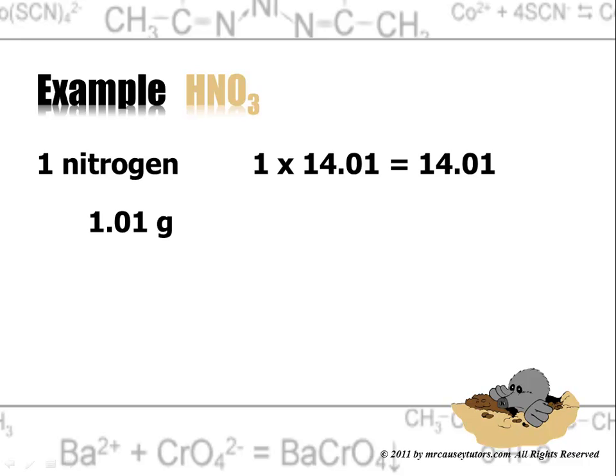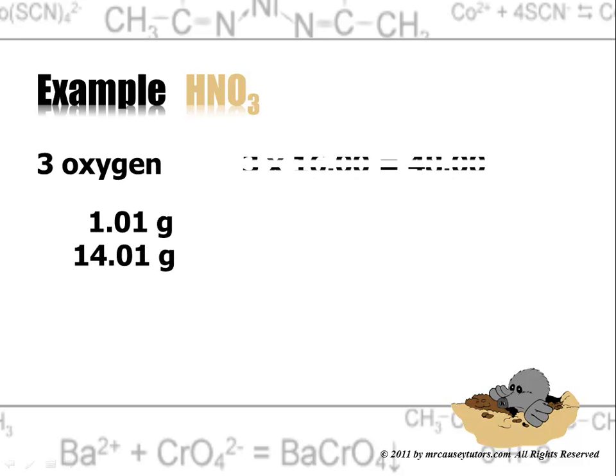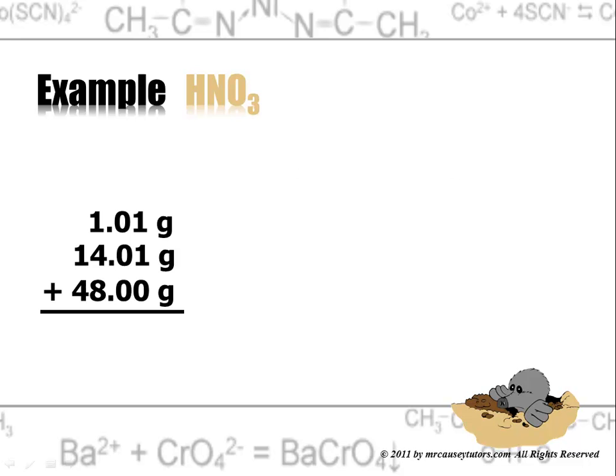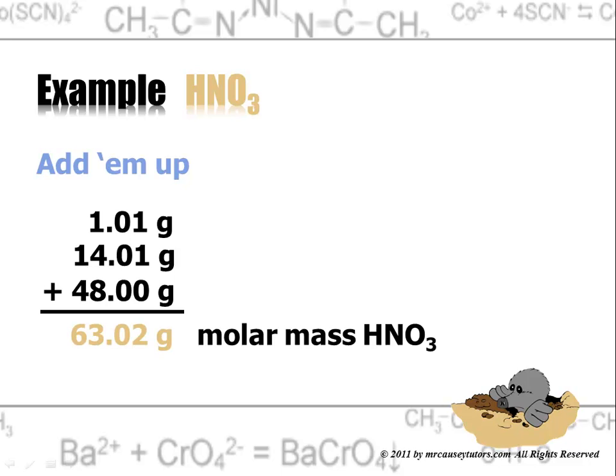Nitrogen, 14.01 grams. There are 3 oxygen. So multiply it by 16 and we have 48 grams. Now add them all up and you get 63.02 grams in the molar mass of HNO3. Which means, 1 mole of HNO3 equals 63.02 grams. It allows us to take particles and change them to grams. It's awesome.